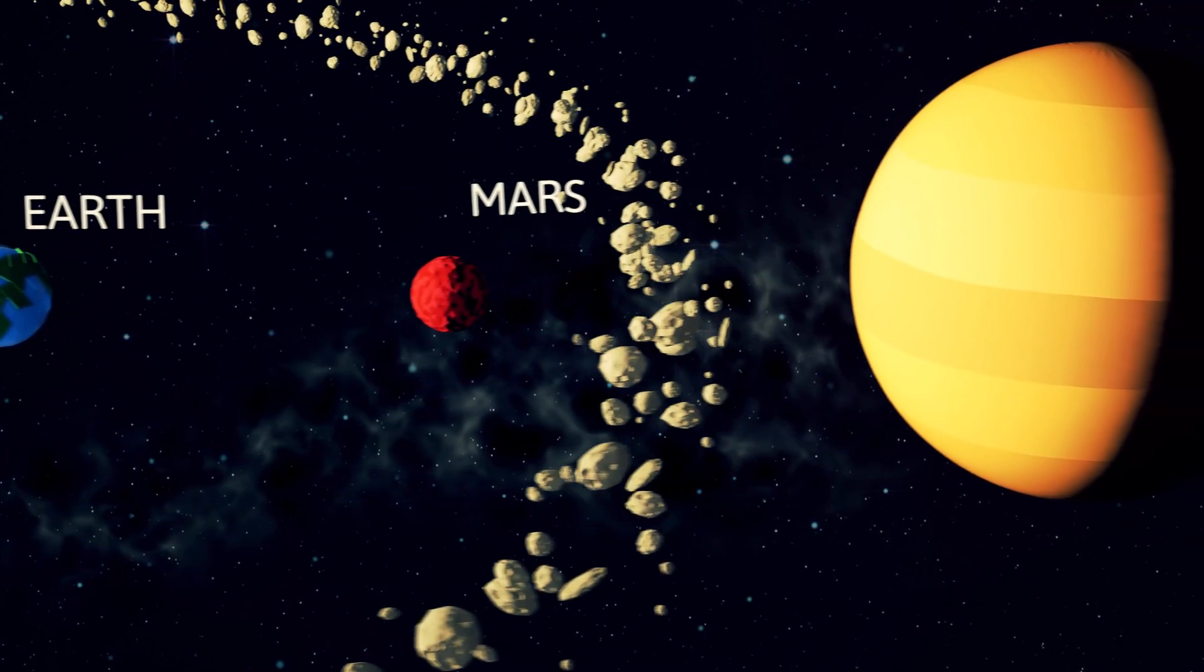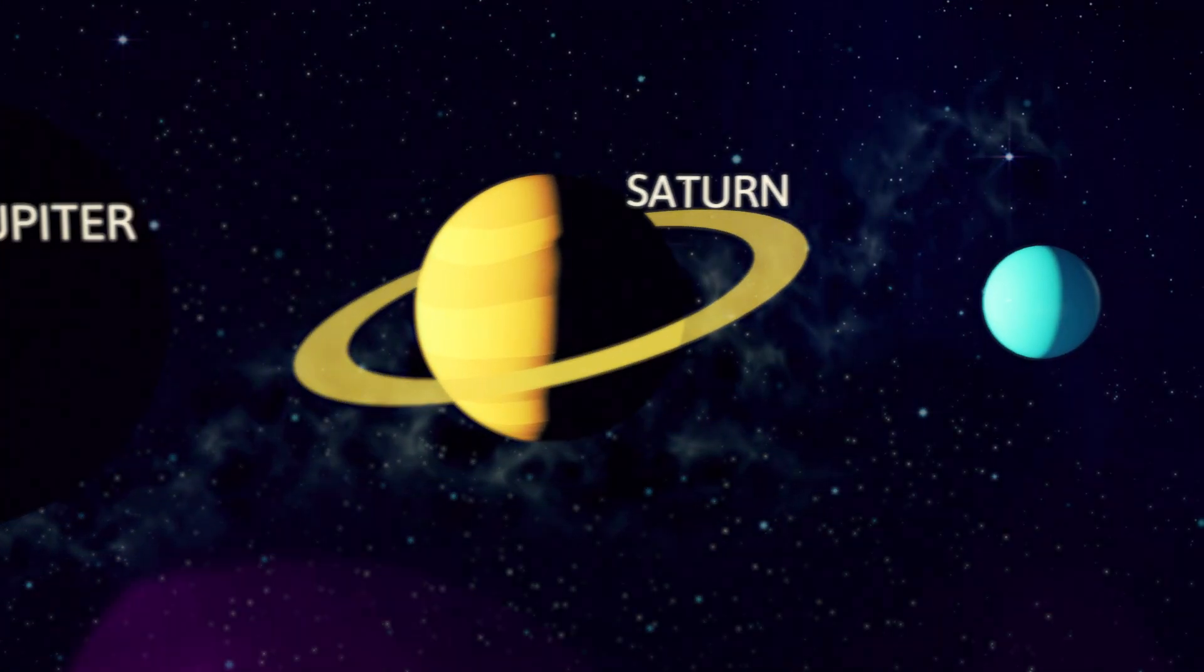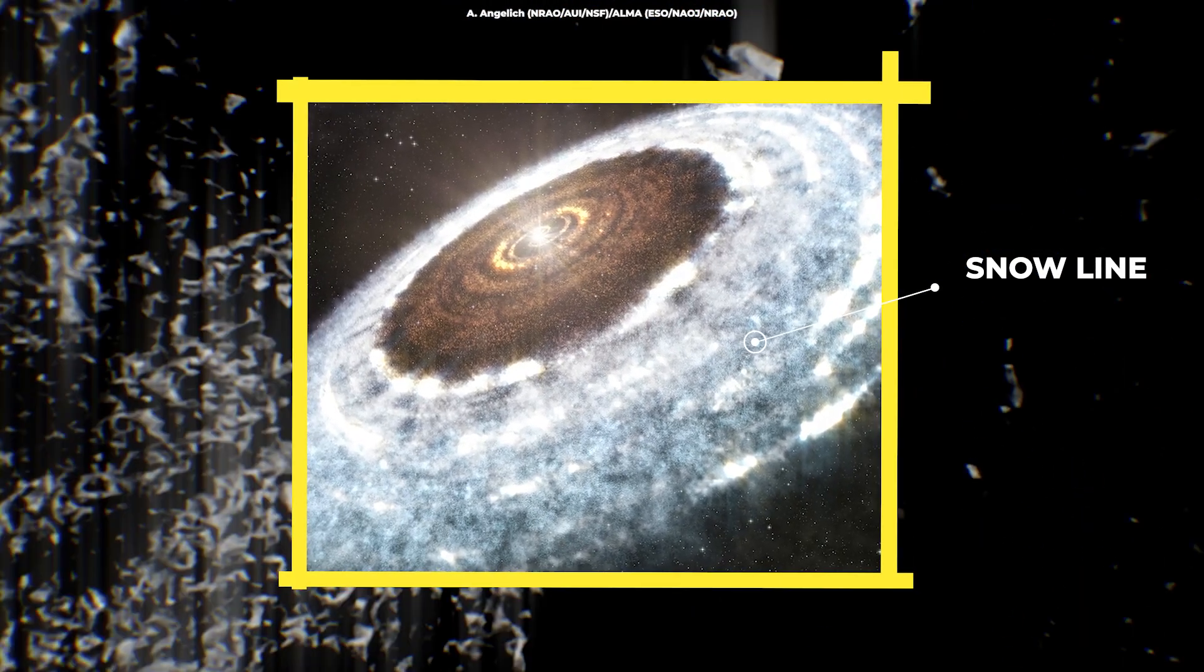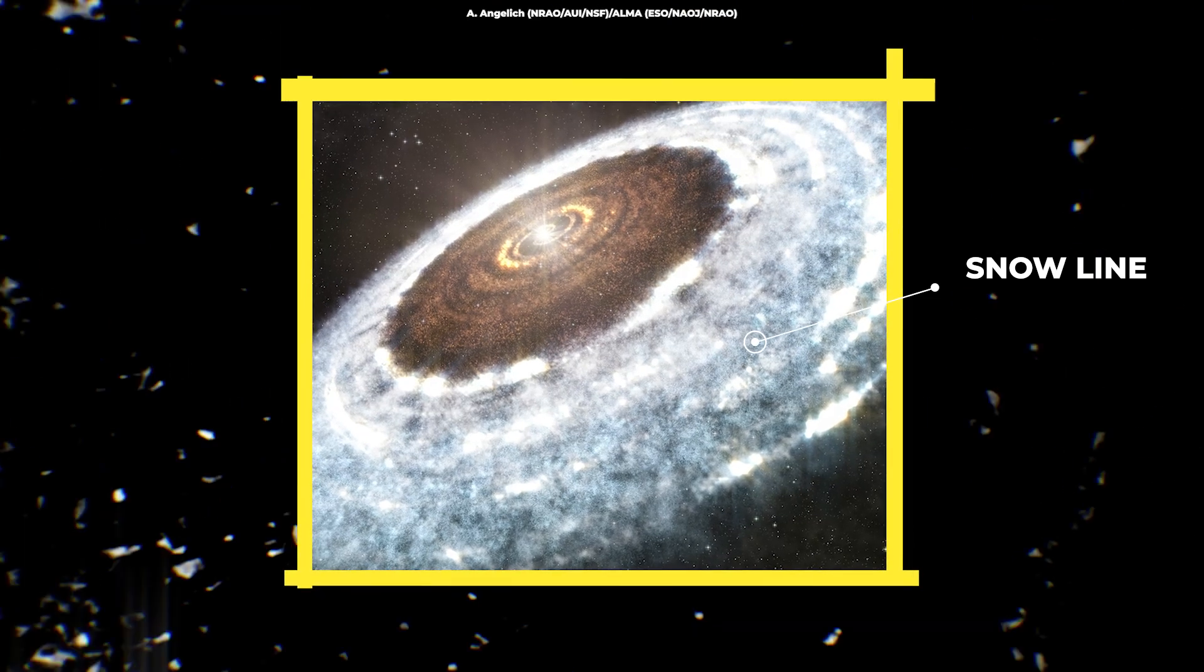Only the outer solar system planets, such as Jupiter, have an abundance of water and other volatiles because they developed outside the snow line, the hypothetical boundary between water vapor and water ice in the solar nebula.